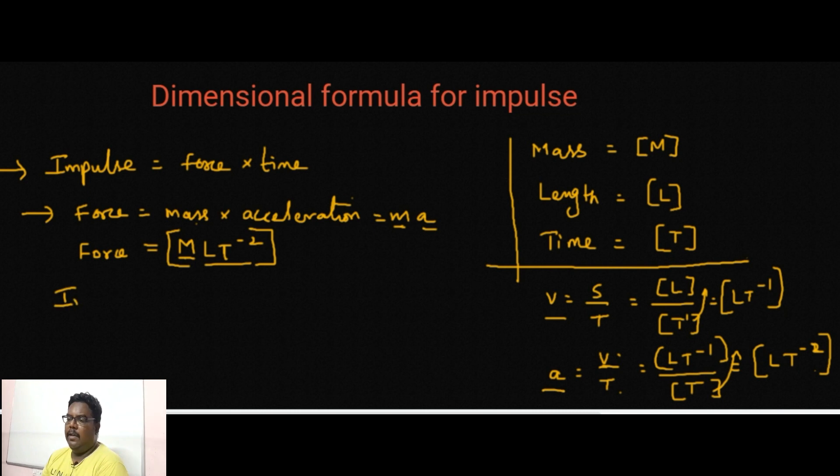Now we calculate the dimension formula for impulse. Force I have calculated to be M L T power minus 2 with the dimension bracket, multiplied with time.